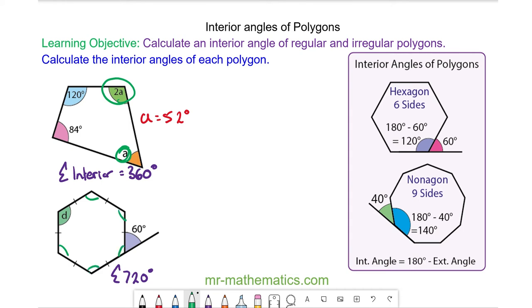So we can work out one of them as 720 divided by 6 which is 120. So this angle is 120 degrees.